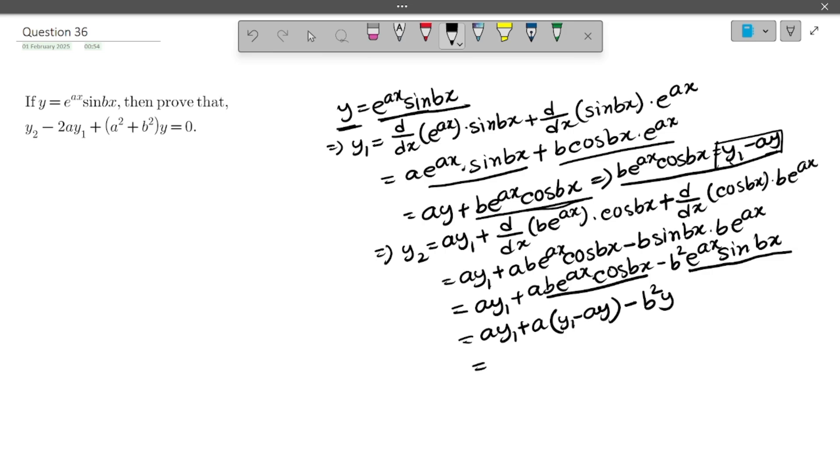So it will be ay₁ plus ay₁, if you open the bracket, ay₁ minus a²y minus b²y. So these two will make 2ay₁ minus, we will take y common out, so it will be (a² + b²) in the bracket into y.